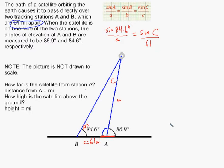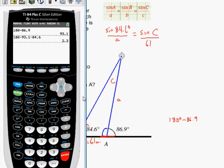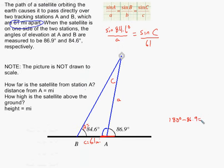Since this angle plus this angle have to add up to 180, this angle here has to be 180 minus 86.9. I have 180 minus 86.9 is 93.2 degrees.